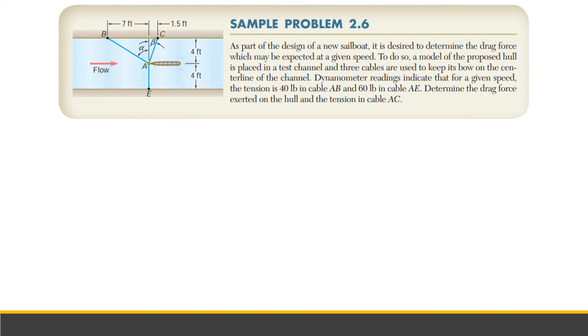Determine the drag force exerted on the hull and the tension at AC. In solving problem, we will pinpoint or select the particle to be analyzed. In this problem, we will select the particle A. We will start with the free body diagram. First force is AB, which is in tension. Tension is away from the particle. That is 40 pounds.